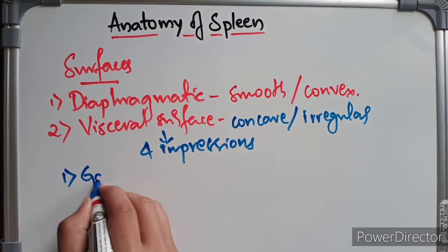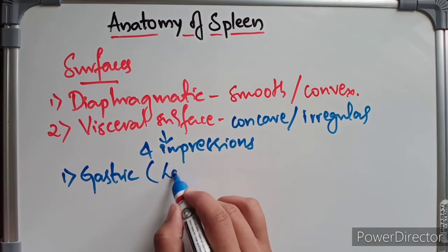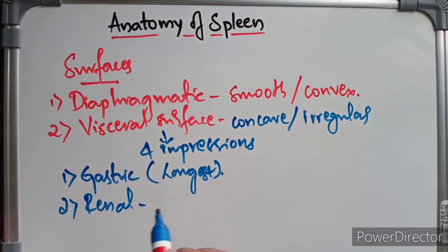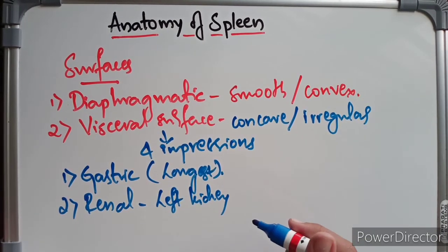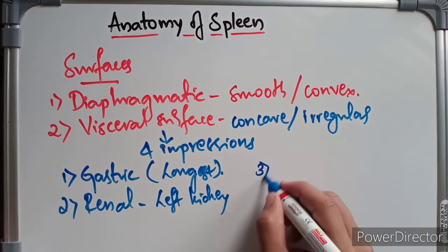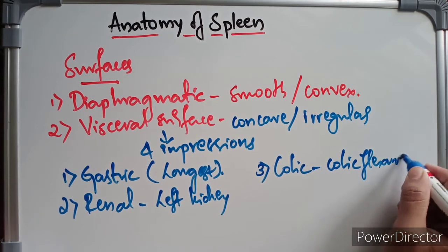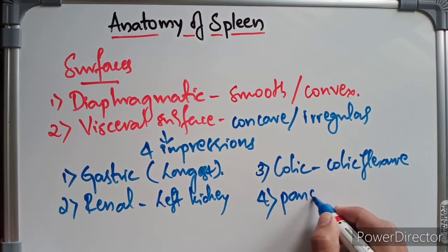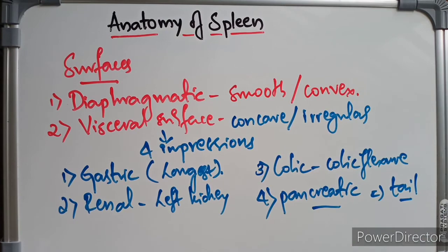The four impressions on the visceral surface are: first, the gastric impression, produced by the fundus of the stomach — it is the largest impression. Second, the renal impression, produced by the left kidney, located behind the gastric impression between the intermediate and inferior borders. Third, the colic impression, produced by the left colic flexure, triangular in shape and situated in front of the lateral end. Fourth, the pancreatic impression, generally not seen, produced by the tail of the pancreas near the hilum.